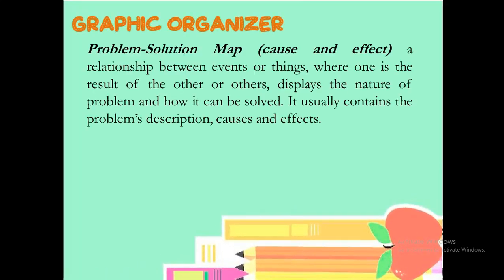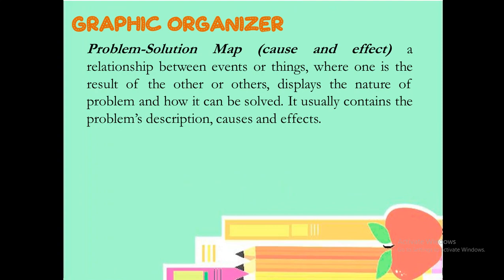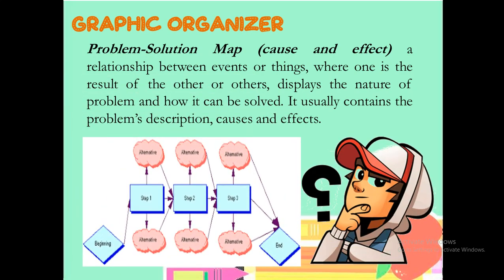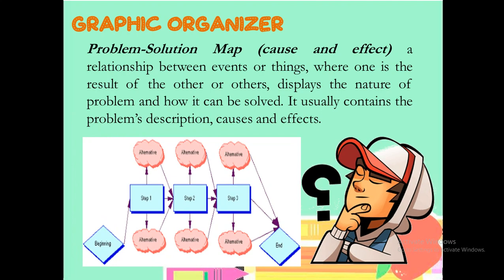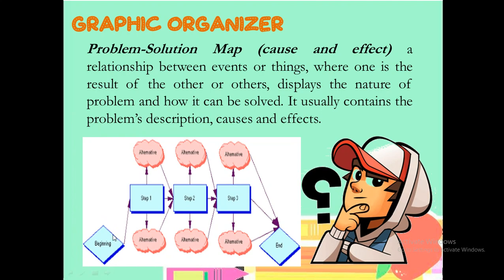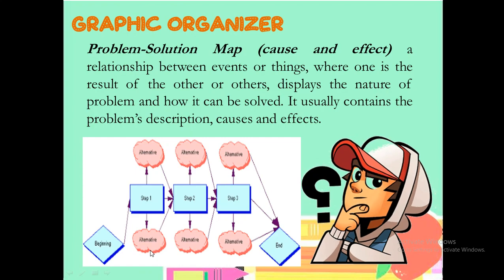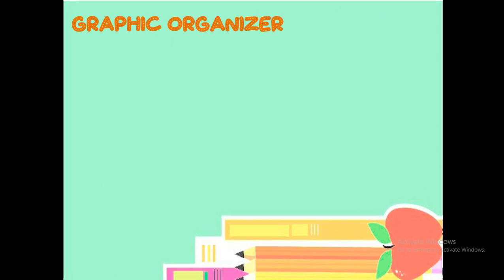Another example of graphic organizer would be the problem solution map cause and effect. A relationship between events or things where one is the result of the other or others, displays the nature of problem and how it can be solved. It usually contains the problems, description, causes and effects. For example, we have this problem and this would be the description of the problem and what would be the cause and what would be the effect of those steps and particularly the problem. That would be problem solution map or the cause and effect. Actually, it's a bit difficult. Yes, compared to the previous one, Venn diagram, conceptual map and the tree diagram.